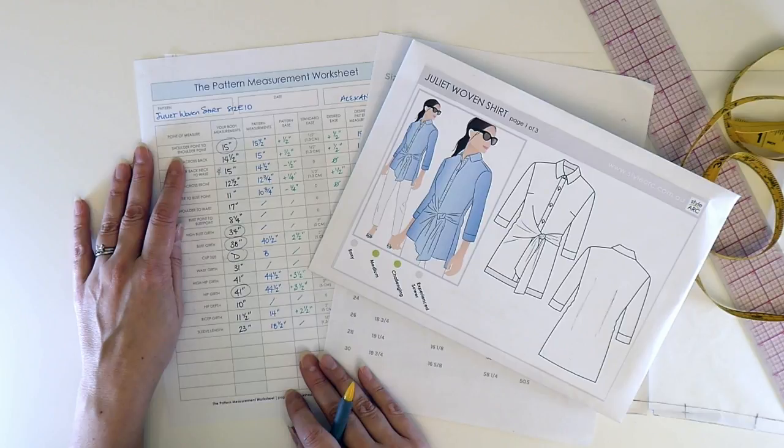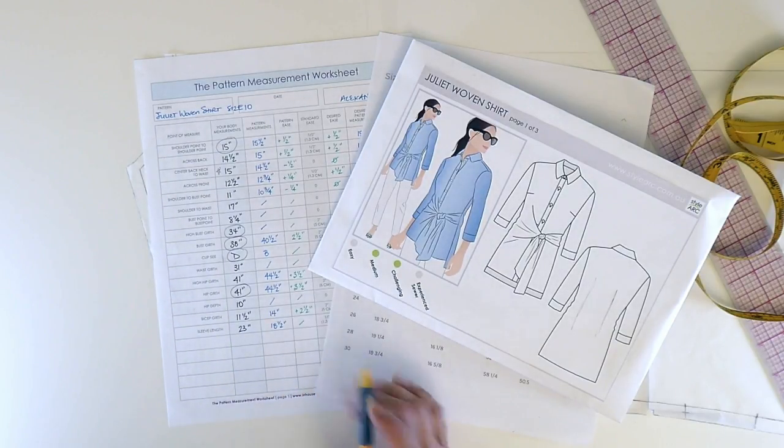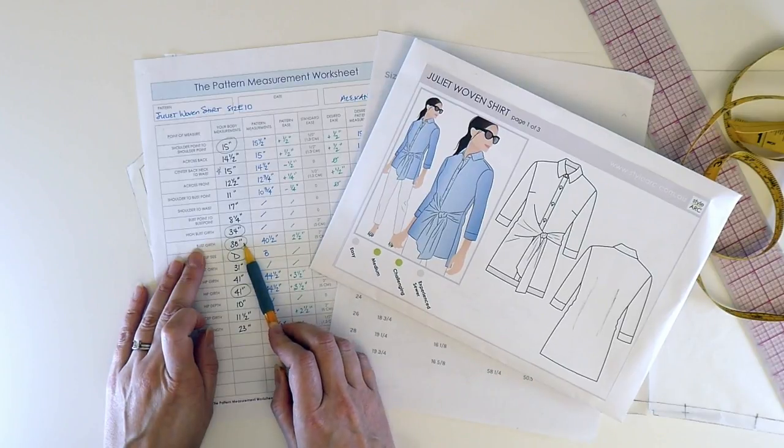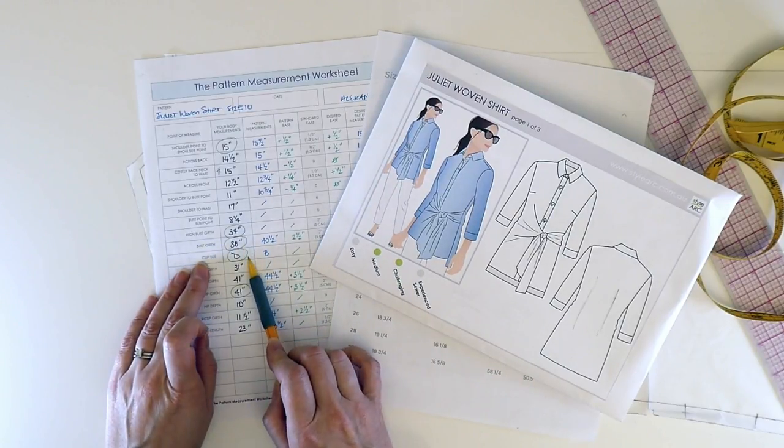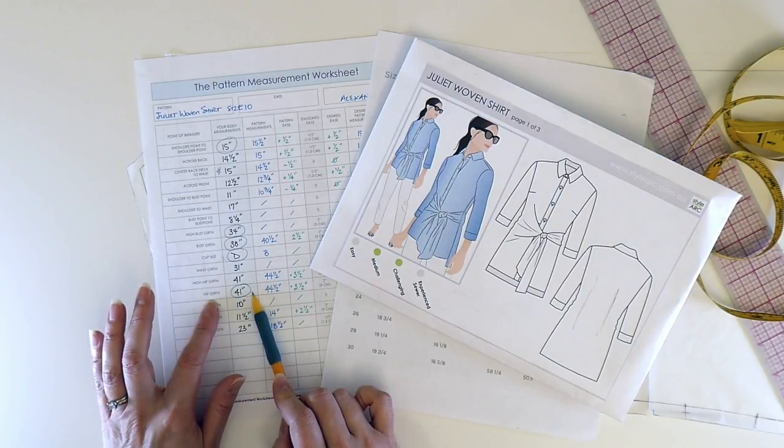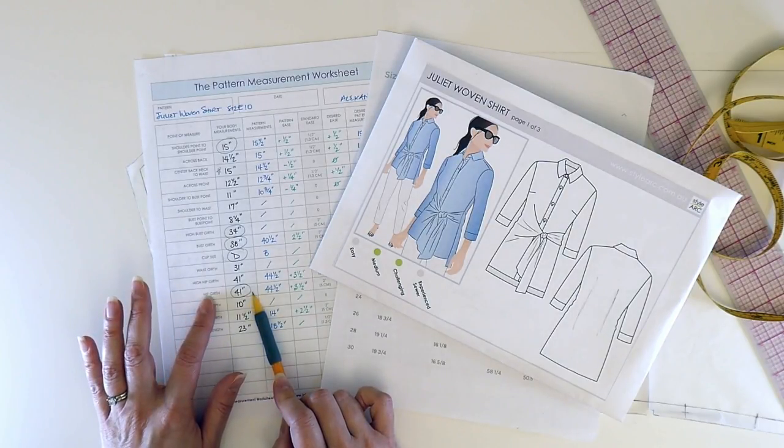So I took four body measurements. The first one was the shoulder to shoulder point or the shoulder width measurement. The second is the high bust girth and the bust girth, which allow me to determine my cup size and my hip girth, just to be able to check if I need to make some final adjustments to that.